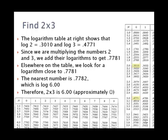So we look elsewhere on the table to find something close to .7781. We found .7782, which is the logarithm of 6.00. So 2 times 3 is 6.00. We'll say approximately 6 because for some reason that .7782 is not exactly the .7781 that we were looking for.